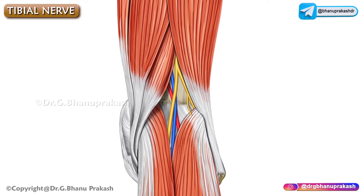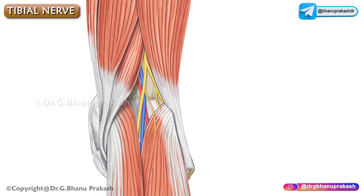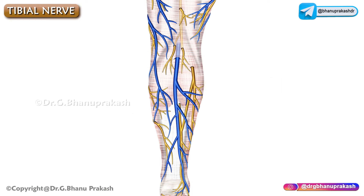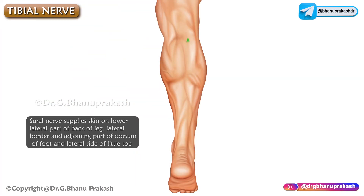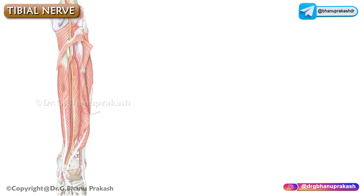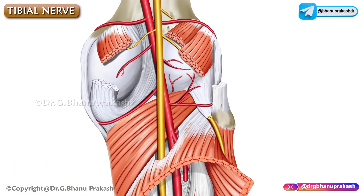In the popliteal fossa, the tibial nerve gives a branch called the sural nerve. The sural nerve is joined by a sural communicating nerve, which is a branch of the common peroneal nerve, and it supplies the skin on the lower part of the back of the leg, lateral border, and adjoining part of the dorsum of the foot, as well as the lateral side of the little toe.